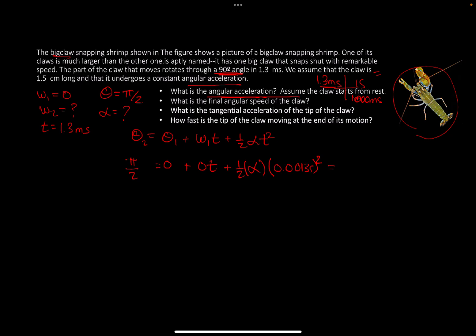Then I solve for alpha. Using a solver or algebra, I get alpha to be 1.86 × 10⁶ radians per second squared. That's the angular acceleration, the answer to part a.